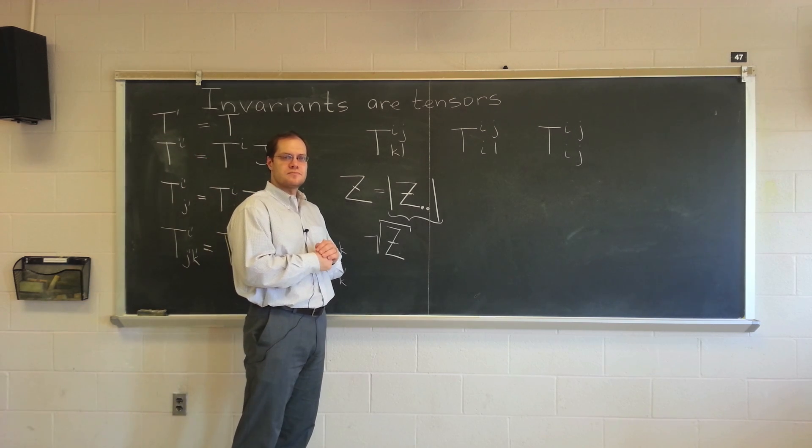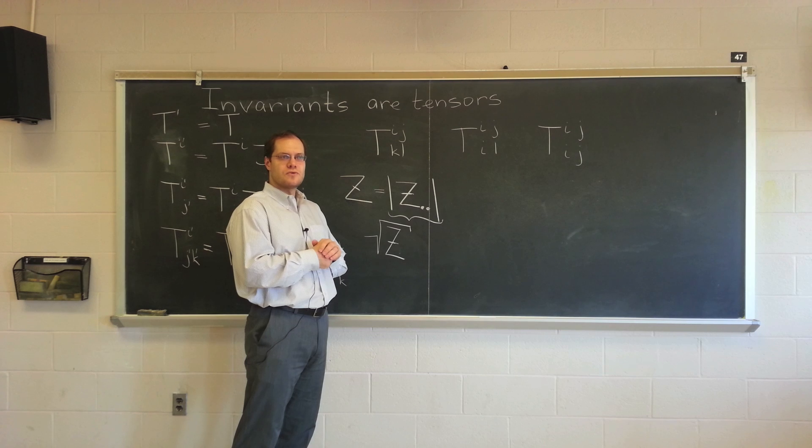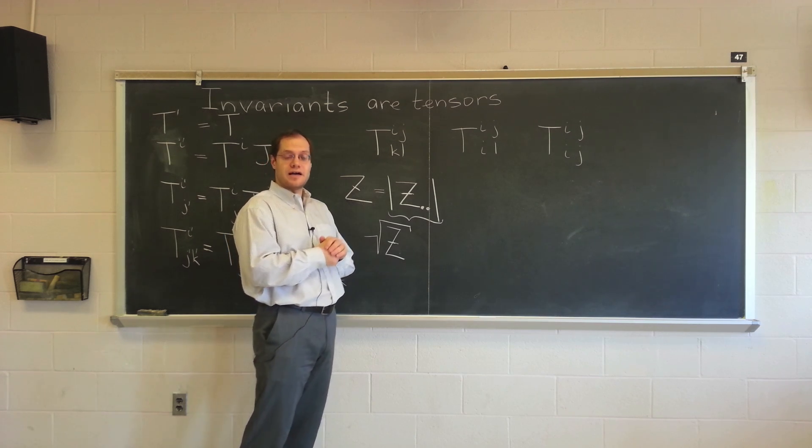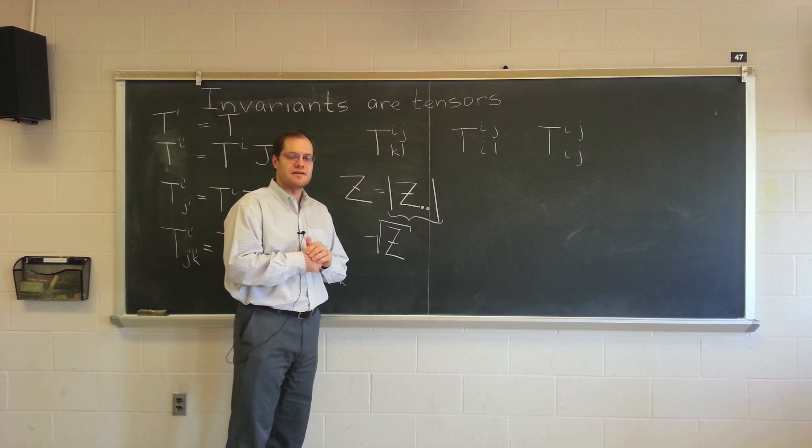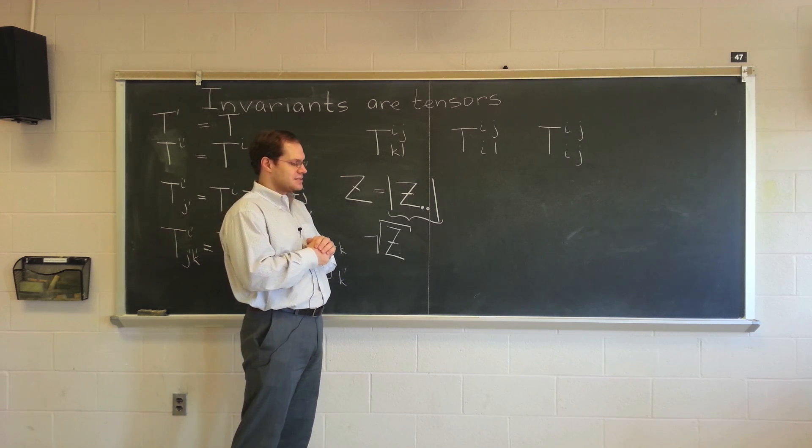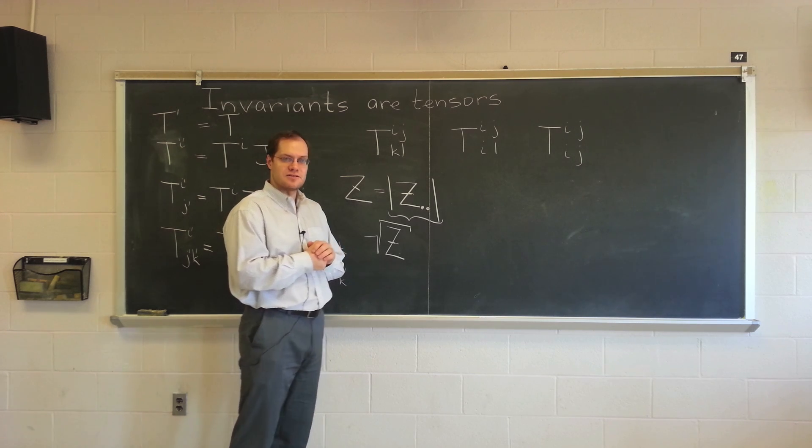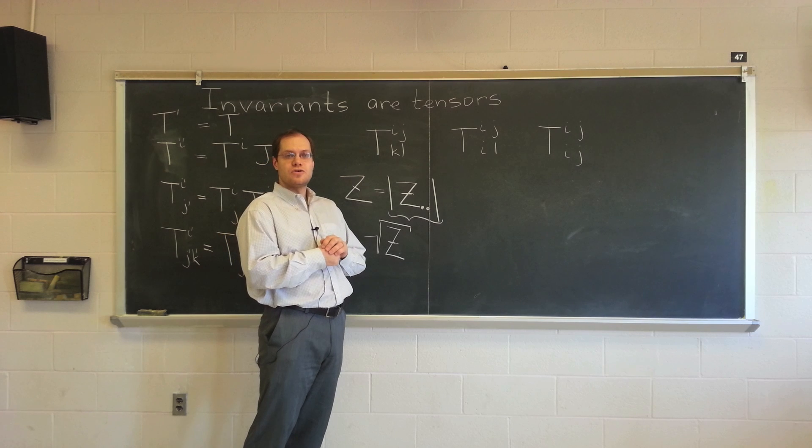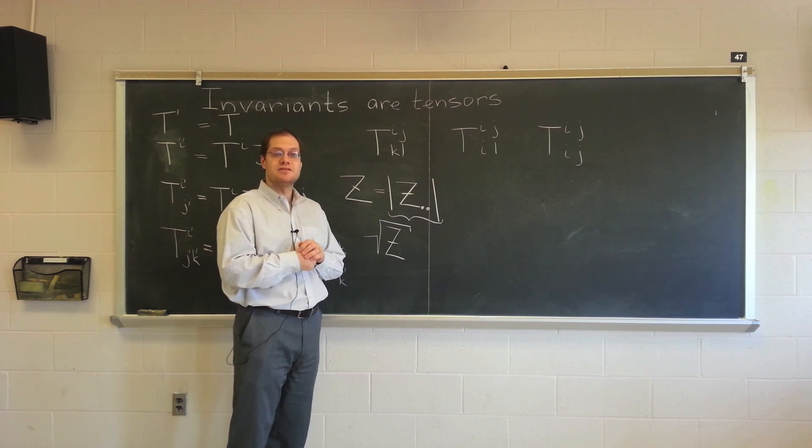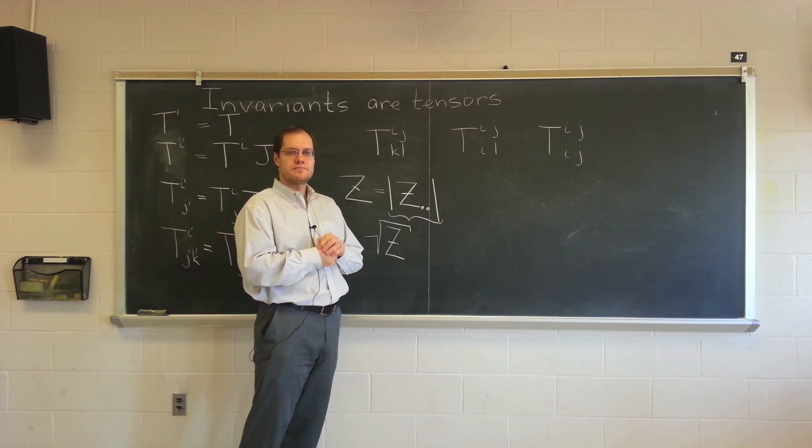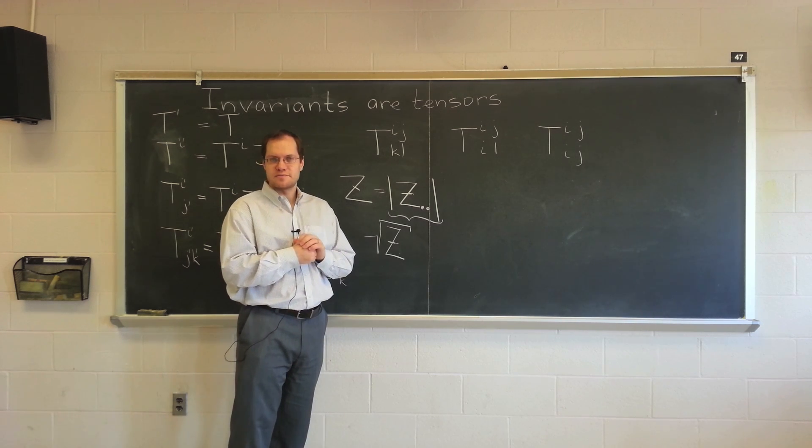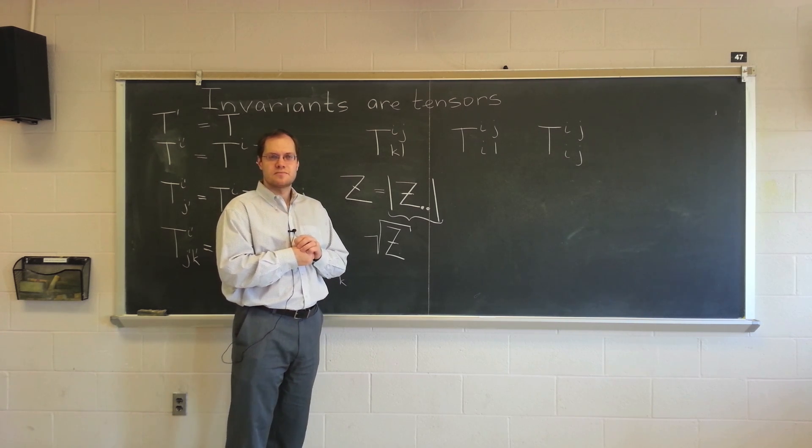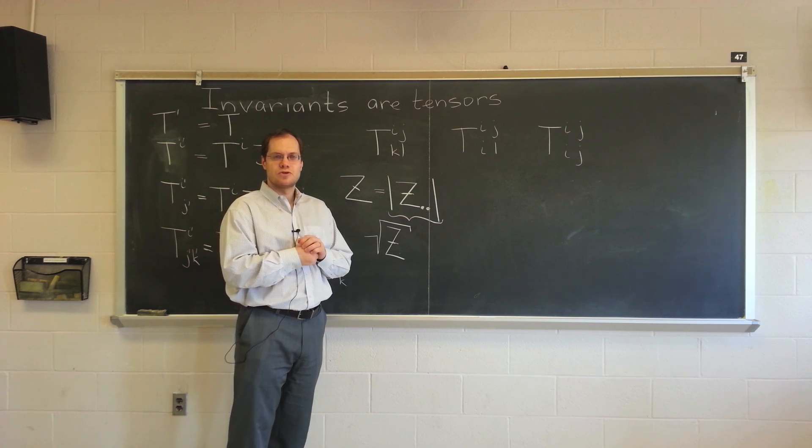Student question: I thought to have an invariant, you need to have something covariant and something contravariant. No? That's usually how you arrive at invariants. But here's an invariant that doesn't come from a combination of covariant and contravariant. Isn't that a giveaway that it's not an invariant? No. How about the position vector?